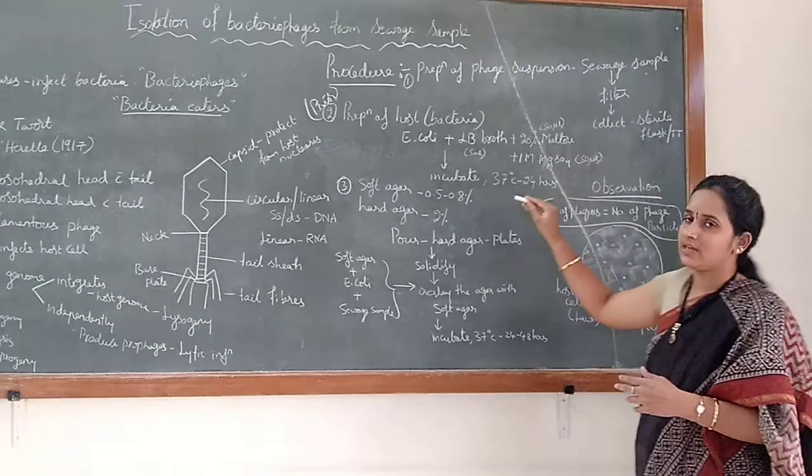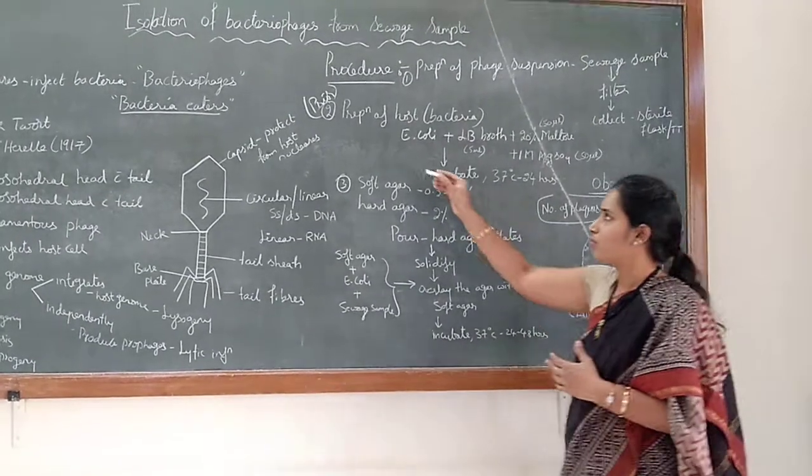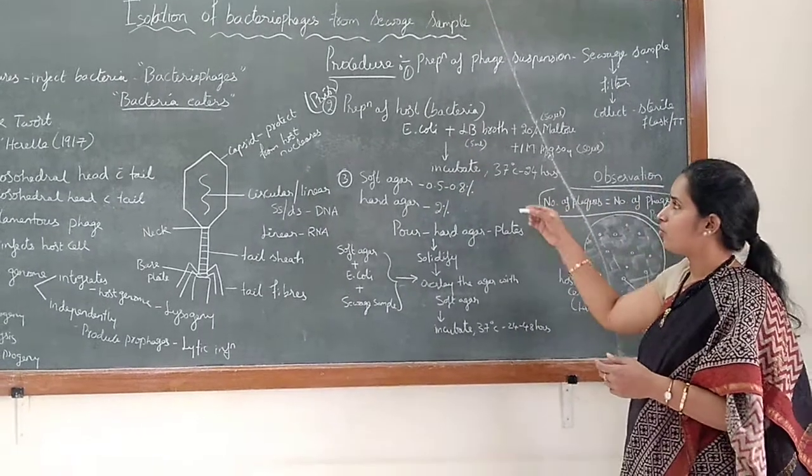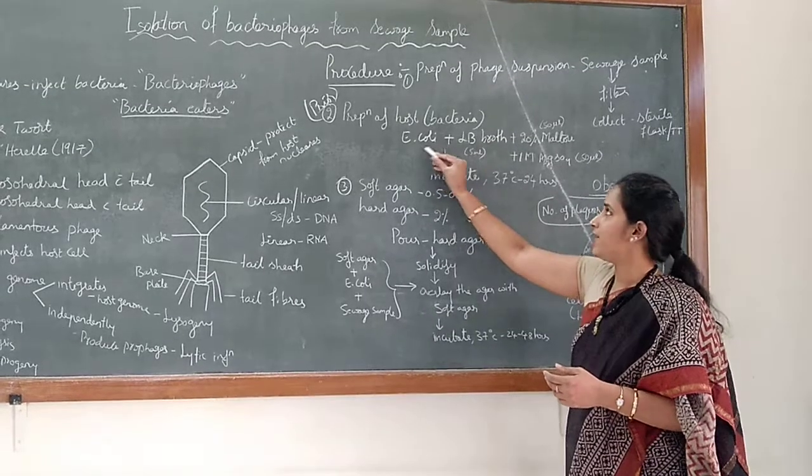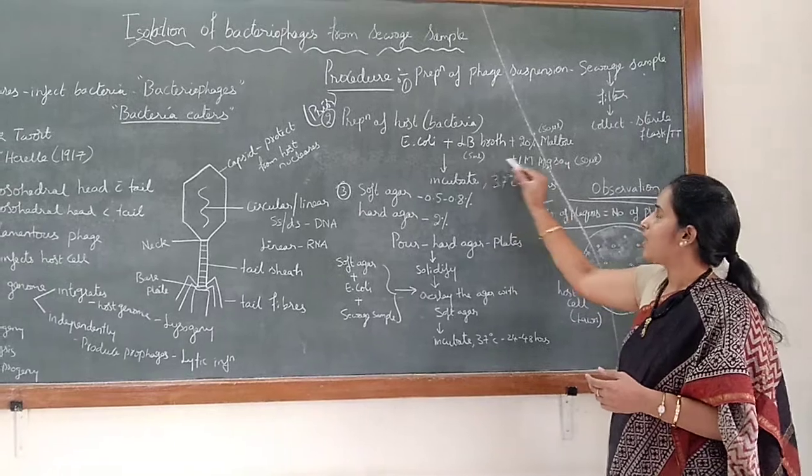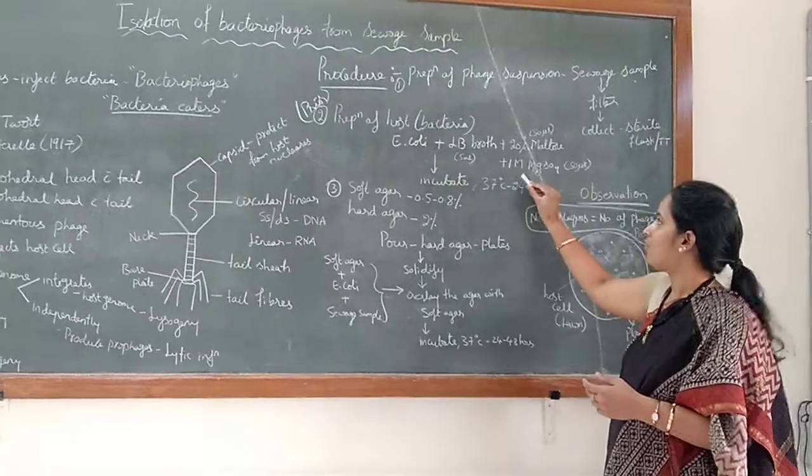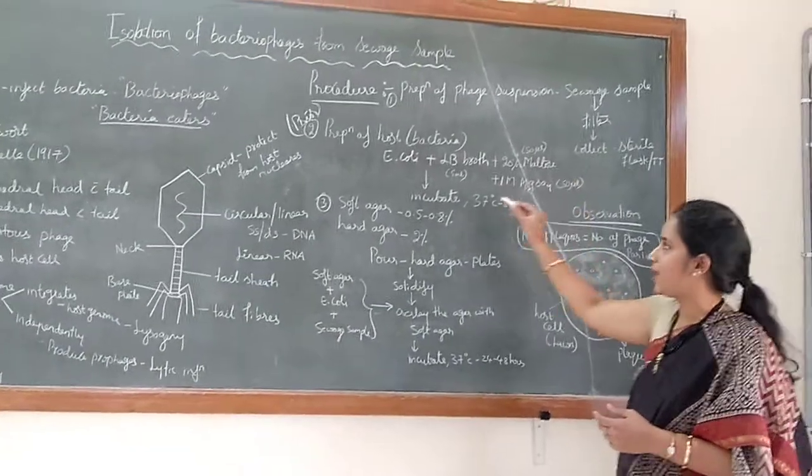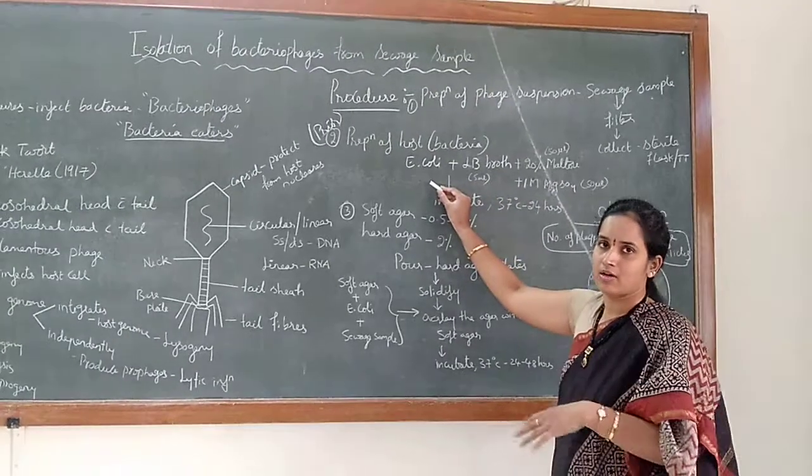And before the experiment, one day prior to the experiment, you need to go with the preparation of the host cell or the bacteria. So whatever the E. coli culture has been there, it has to be inoculated into the LB broth, about 5 ml, and to that 20% maltose has been added along with 1 molar MgSO4.